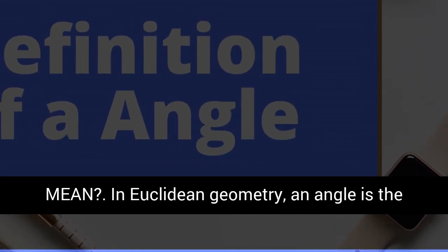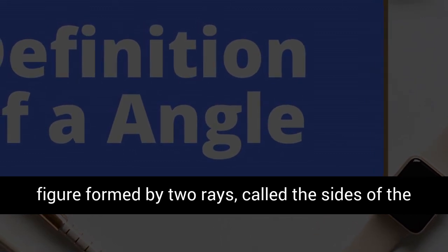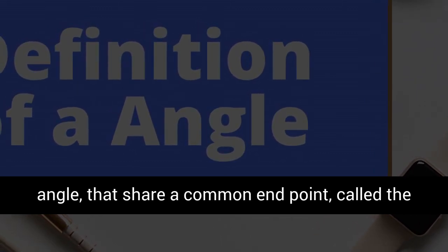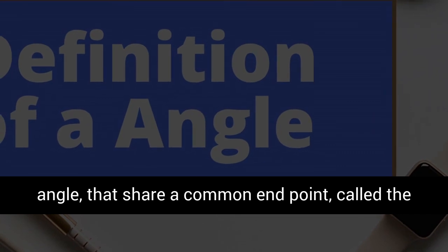In Euclidean geometry, an angle is the figure formed by two rays, called the sides of the angle, that share a common end point, called the vertex of the angle.